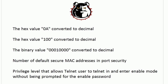Value one: the hex value 0A converted to decimal. Value two: the hex value 100 converted to decimal. Value three: the binary value 00010000 converted to decimal. Value four: the number of default secure MAC addresses in port security. And finally, value five: the privilege level that allows Telnet users to telnet in and enter enable mode without being prompted for the enable password.